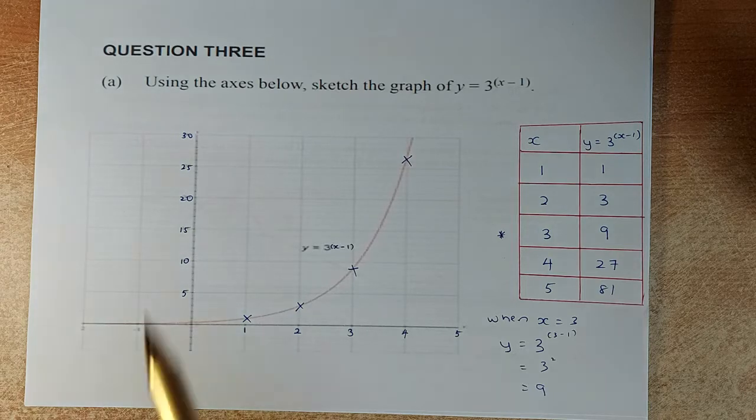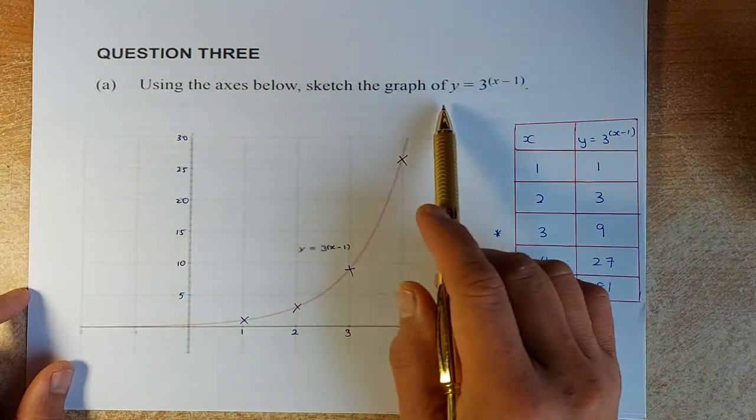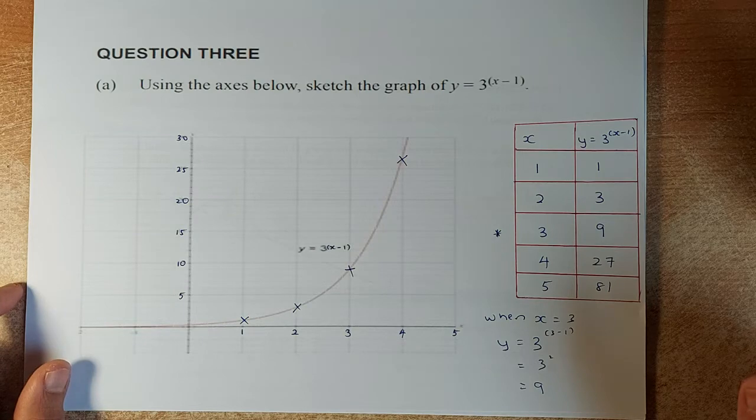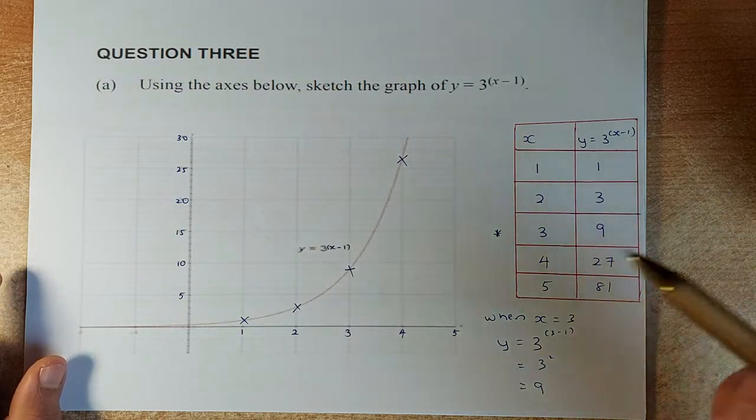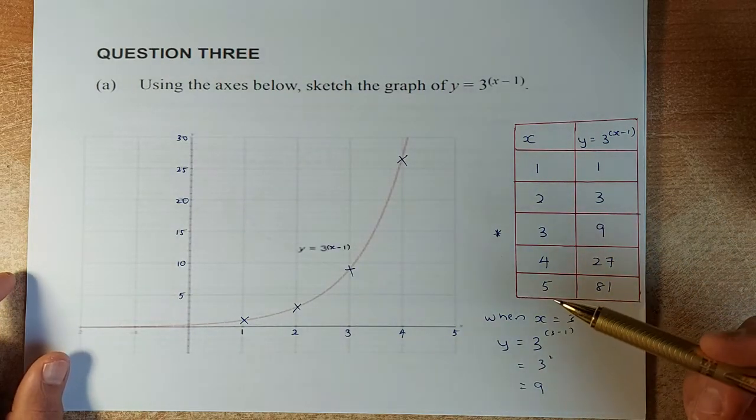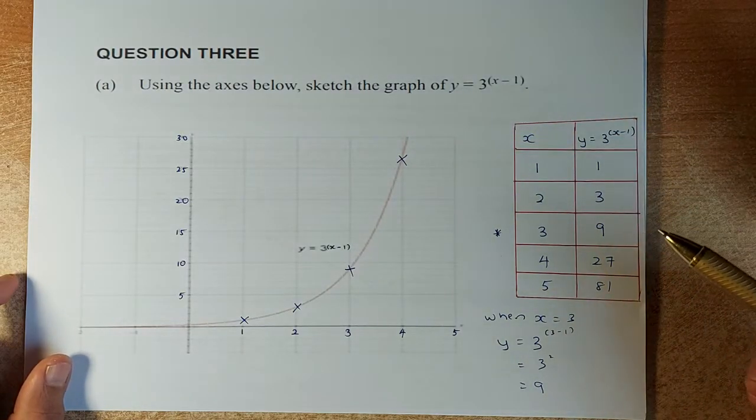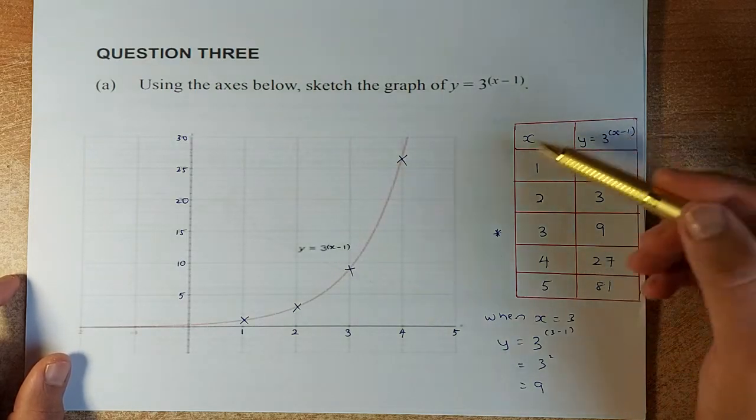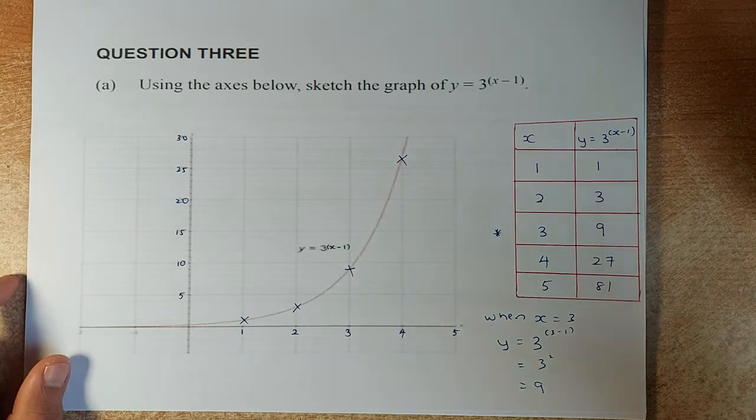So let's go. Question 3, the first question says draw the graph or sketch the graph of y equals 3 to the power of x minus 1. And you know this is an exponential graph. So to do that, whenever you have a graph, the best thing to do is to draw a table. If you have a graphic calculator, just put this equation into the table section and the graph will appear for you. For those of you without a graphic calculator, I'll show you how to do it.